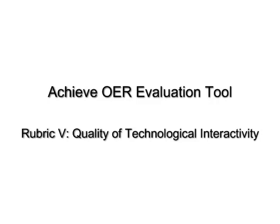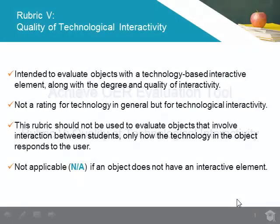This video explains Rubric 5, which is used to evaluate quality of technological interactivity and how it should be applied in the OER Evaluation Tool. This rubric is intended to evaluate objects with a technology-based interactive element, along with the degree and quality of technological interactivity.